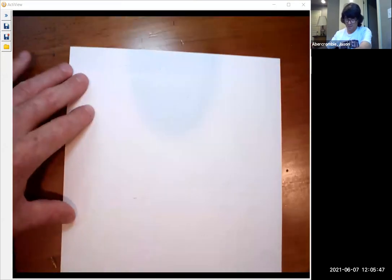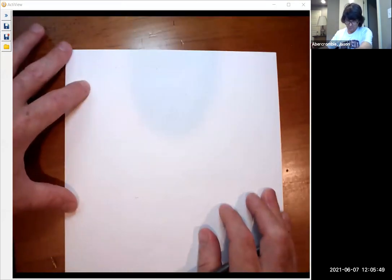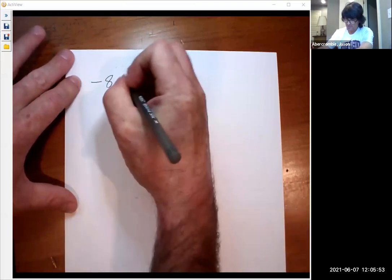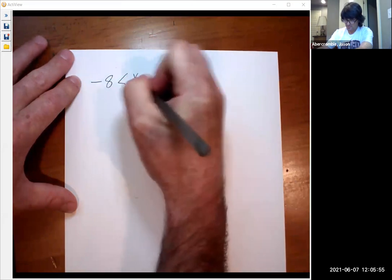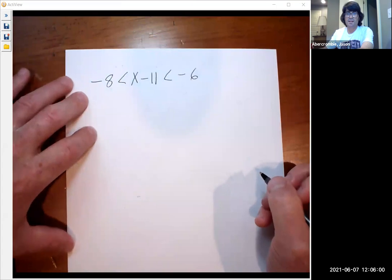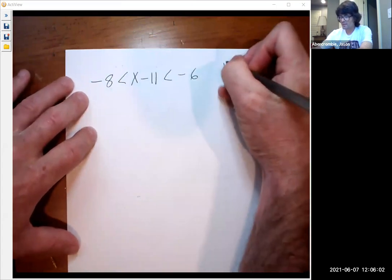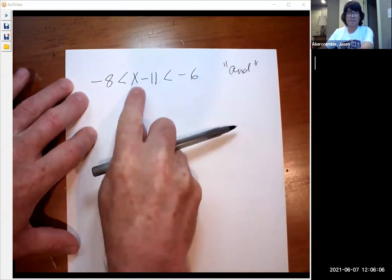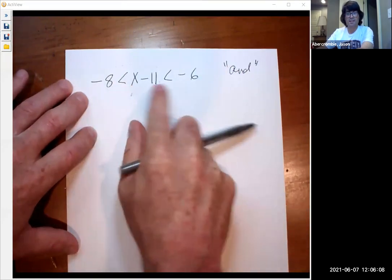Sometimes you might have an inequality that has three different segments in it. So maybe something like negative 8 less than x minus 11 less than negative 6. This is a case where you have an and situation, because x minus 11 is bigger than negative 8 and it's also less than negative 6.